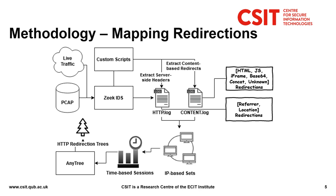In order to map the content-based redirects — so redirects that occur through HTML or JavaScript code or from an iframe — we need to analyze the content of the web pages. To do that we created a Zeek script which will reassemble the HTTP bodies and parse the content looking for HTML, JavaScript, and iframe-based redirections, and also some basic obfuscated redirects like base64 and concatenation-based. This script will store each unique redirect as a log entry consisting of a timestamp, unique identifier, the source and destination URL, and the type of redirect that occurred. The regex is designed to defeat simple obfuscation techniques such as whitespace randomization, case sensitivity, foreign characters, and things like that.